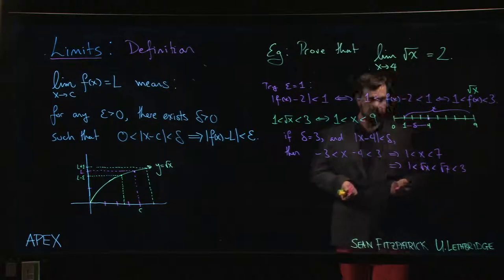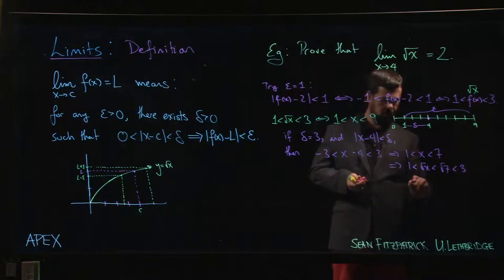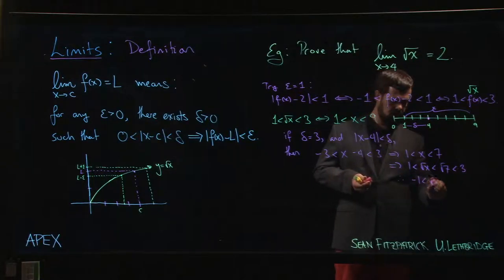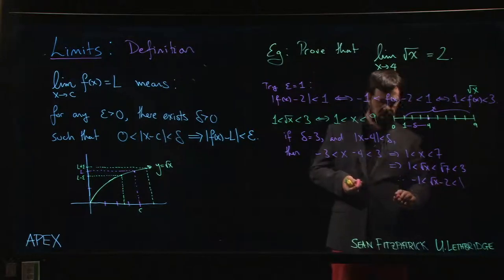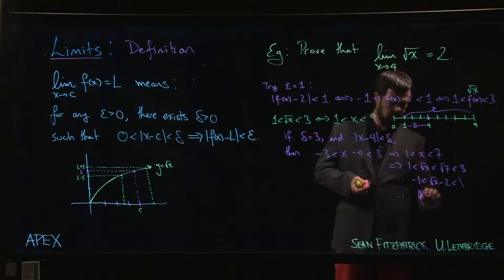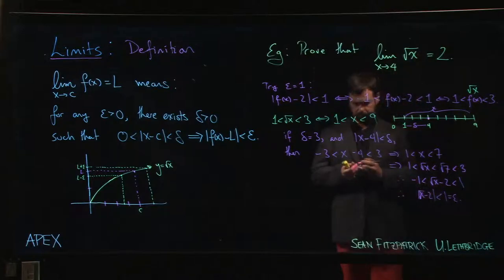I know it's smaller than three. So minus one is less than root x minus two is less than one, and that means that root x minus two is less than one, which is my epsilon. That's the general idea.